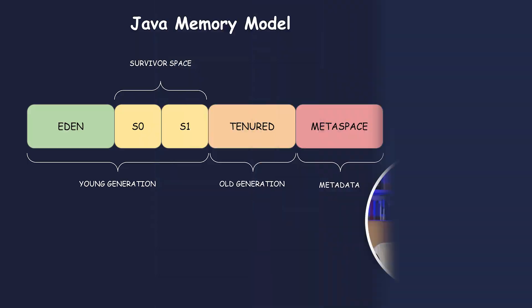Garbage collection in Java is automatic. An object is considered eligible for GC when it becomes unreachable, meaning that there are no references to it. Such objects are deleted by the garbage collector.